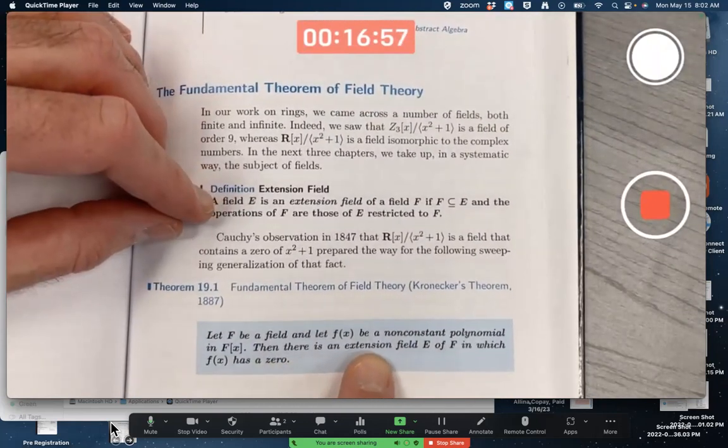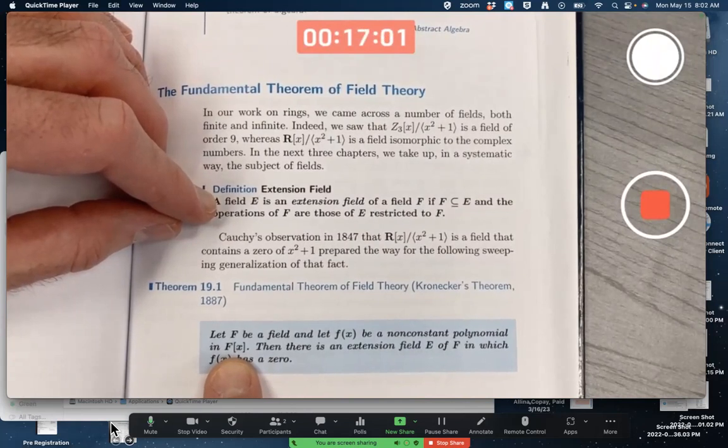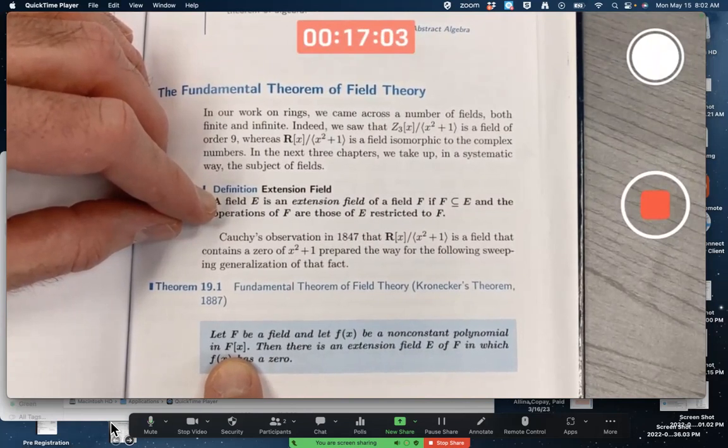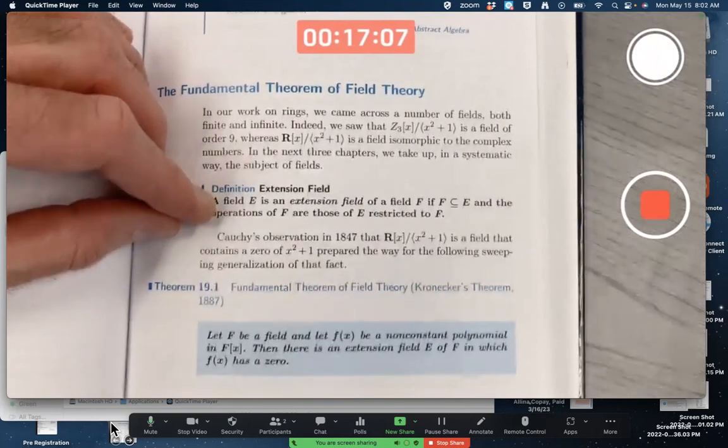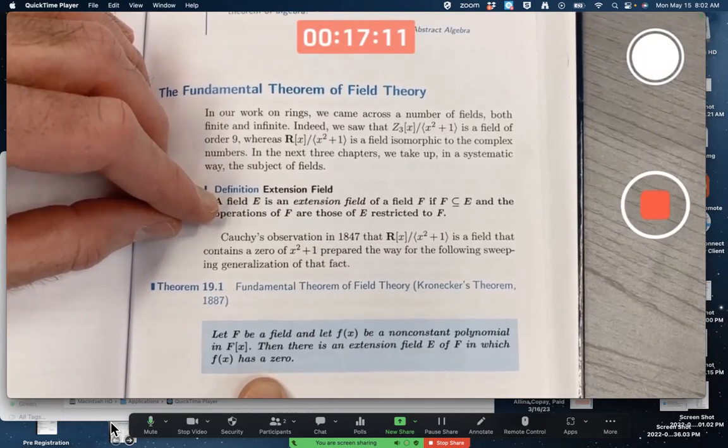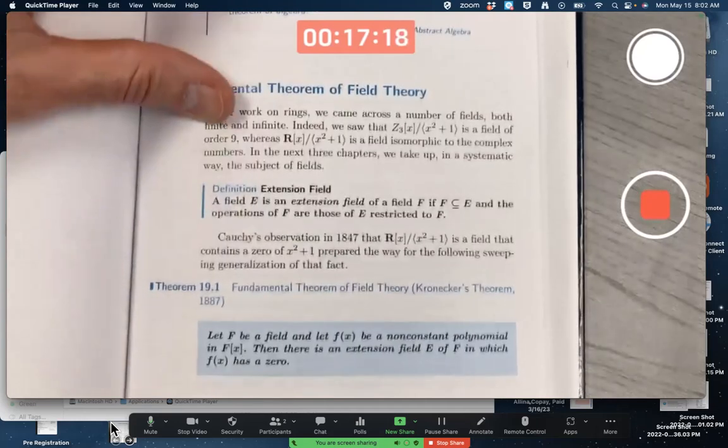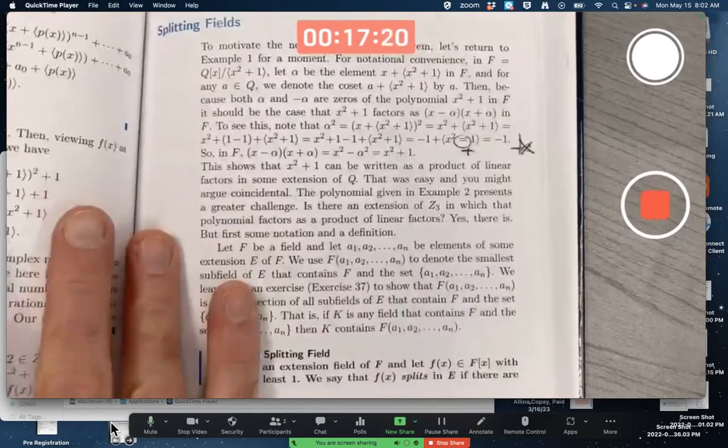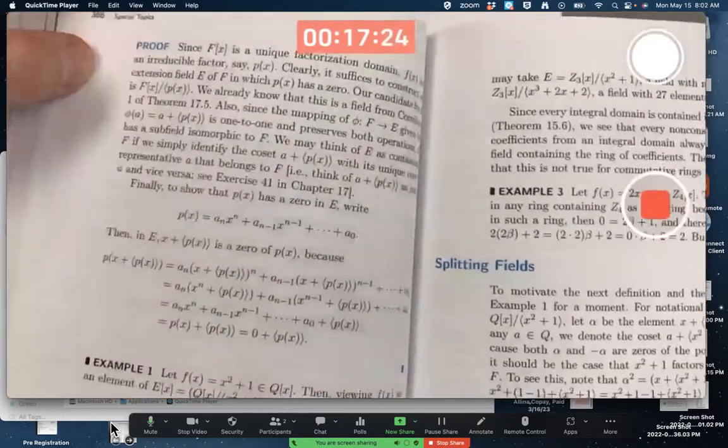Let F be a field. Let f(x) be a non-constant polynomial in the corresponding ring of polynomials with coefficients in F. Then there is, this is an existence theorem, there exists an extension field E of F in which f(x) has a zero. It just says a zero, not necessarily more zeros, but there could be more.